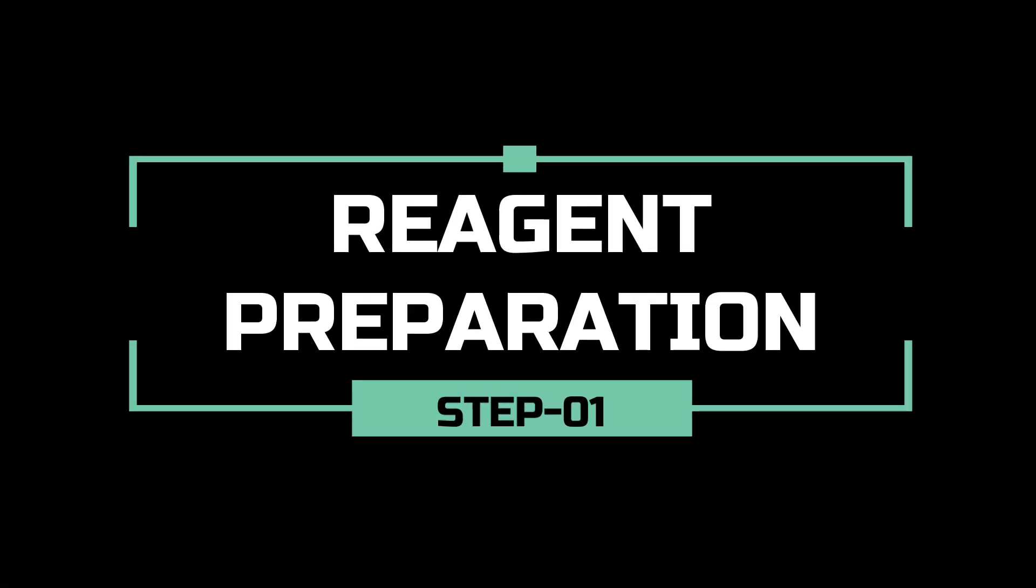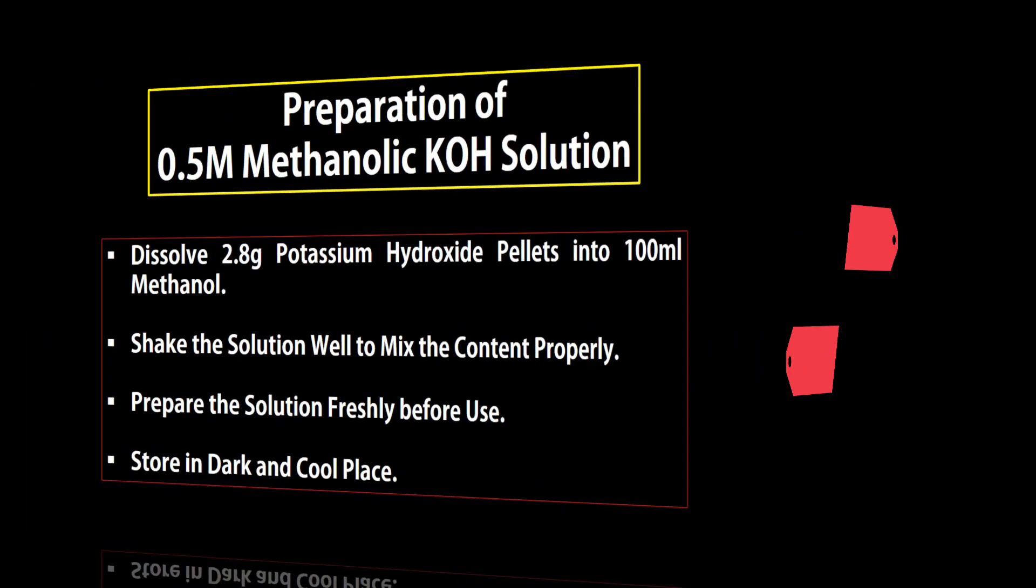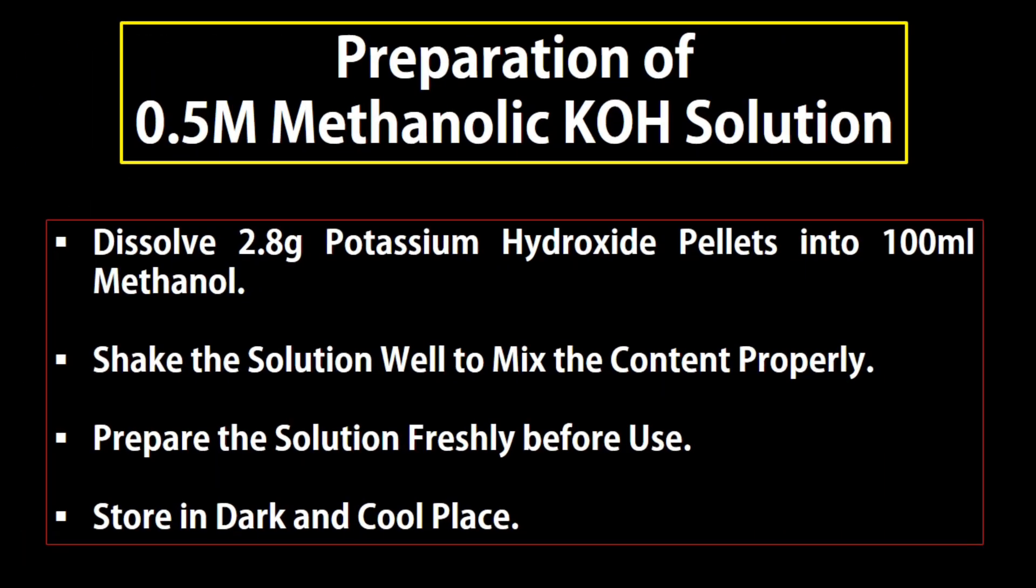First step is all about chemical and reagent preparation. For the preparation of 0.5 molar methanolic potassium hydroxide solution, dissolve 2.8 grams potassium hydroxide pellets into 100 ml methanol.